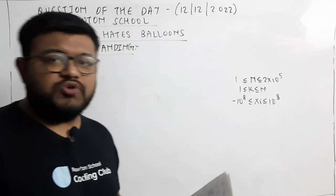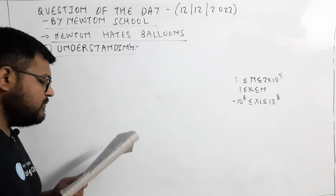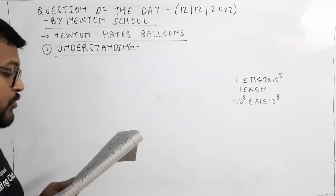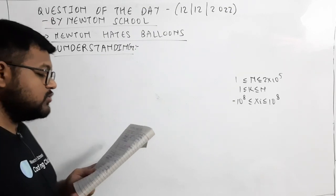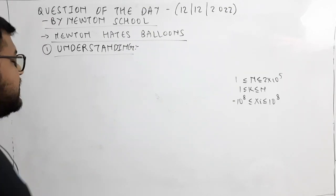As always, let's start by answering the question. There are N balloons placed on a number line. Newton doesn't like balloons, so he wants to burst exactly K balloons.